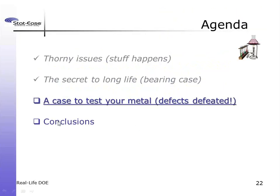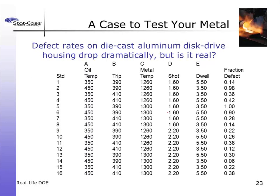Now let's move on to Case Study 2, which represents the other type of error — where we overlook a true outlier that is actually sabotaging our results. The first case (the bearing case) was one where there wasn't an outlier but we thought there was. This case is one where there IS an outlier but we don't realize it's there. This is another true story.